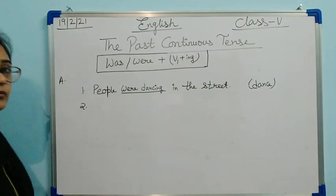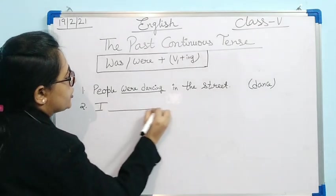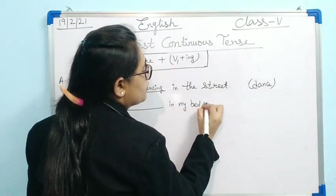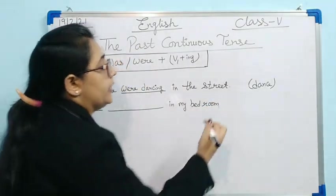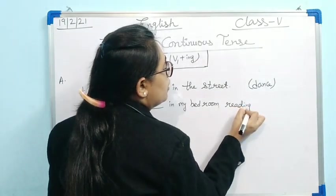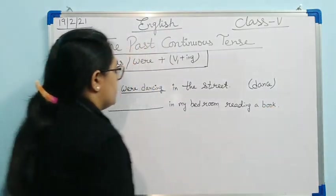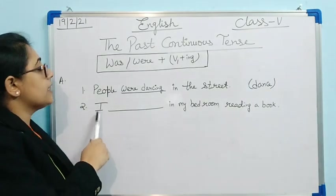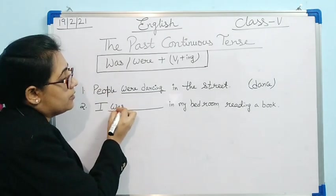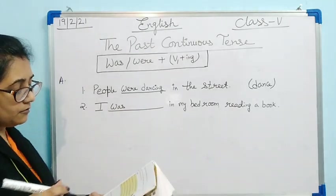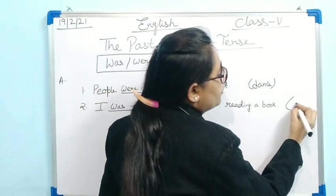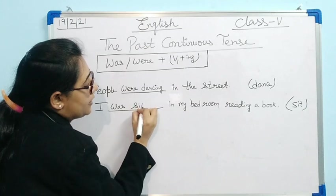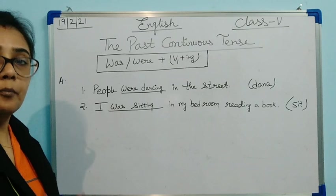Second example: 'I dash in my bedroom, reading a book.' The subject is 'I' — a single person. For a single person we use 'was'. Verb given is 'sit'; add -ing to get 'sitting'. So the answer is: 'I was sitting in my bedroom, reading a book.'